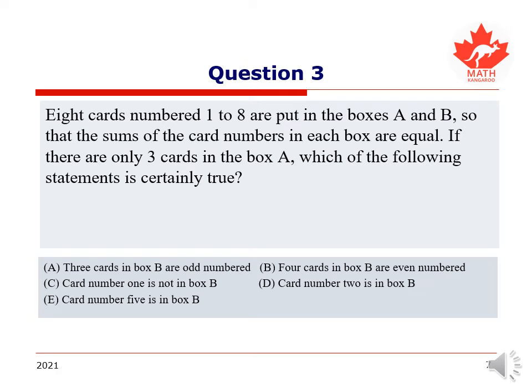Here is our third question. Eight cards numbered one to eight are put in the boxes a and b, so that the sum of the card numbers in each box are equal. If there are only three cards in box a, which of the following statements is certainly true? a three cards in box b are odd numbered, b four cards in box b are even numbered, c card number one is not in box b, d card number two is in box b, or e, card number five is in box b.